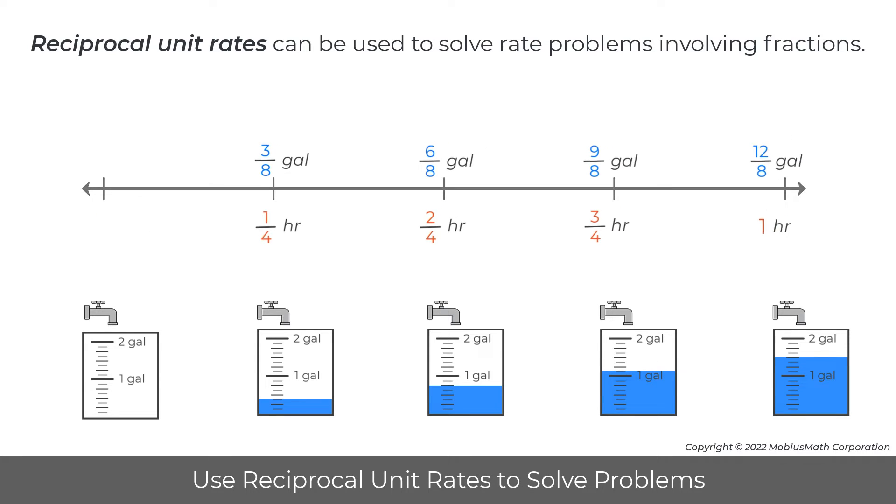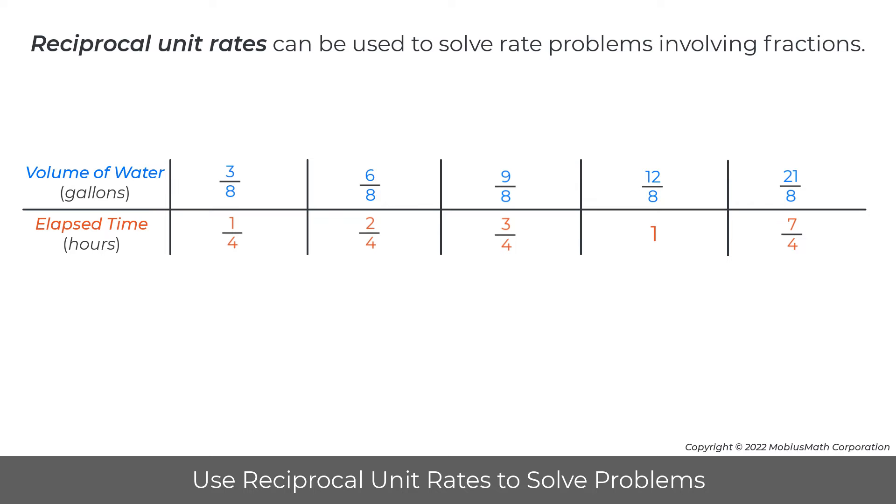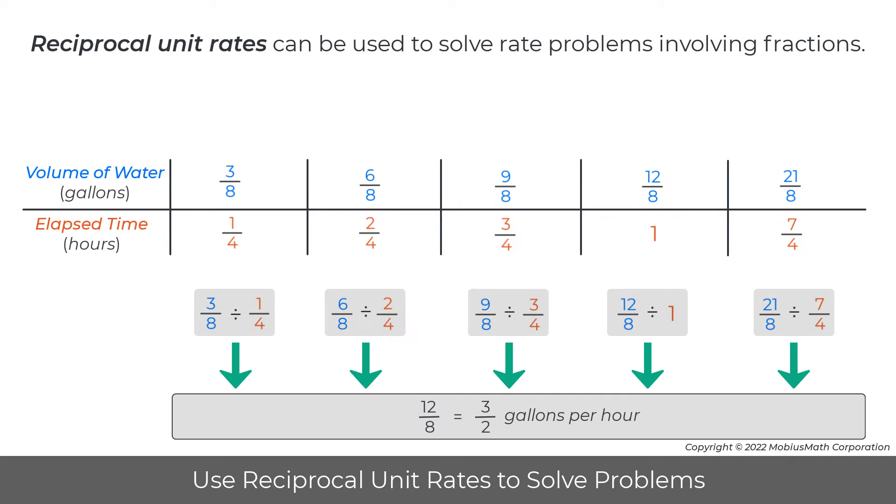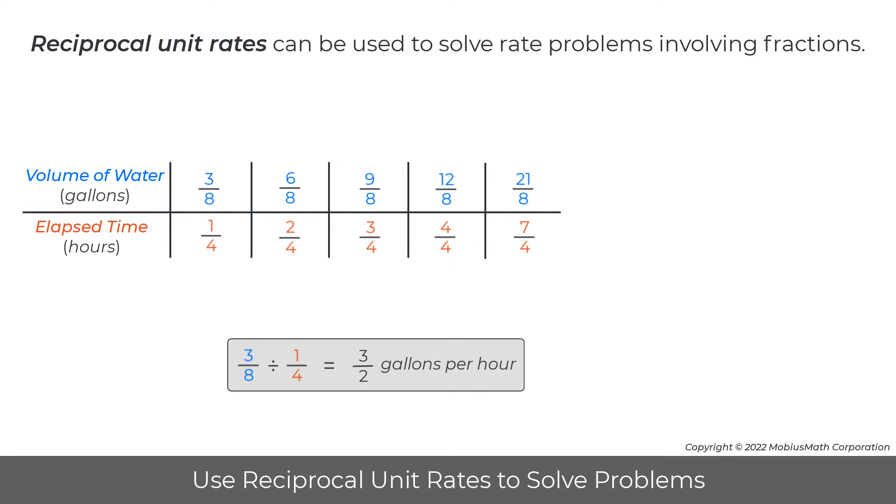Equivalent rates were also represented in a ratio table. Dividing the value for gallons by the value for hours generated a unit rate of three-halves of a gallon per hour.